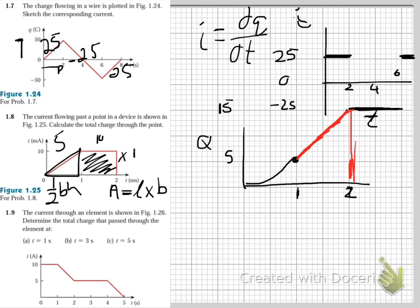For question 1.9, the current through an element is shown in figure 1.26. They say: determine the total charge that passes through the element at one second. The integral of current is charge. At one second, we've got 10 by 1, which is 10 — a rectangle, length times base, equals 10 coulombs.